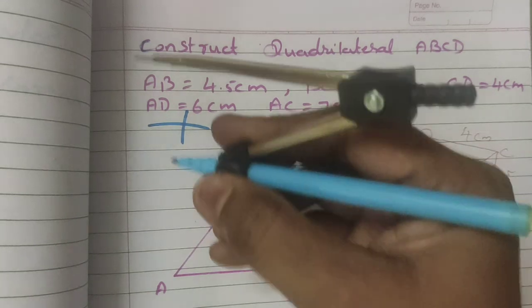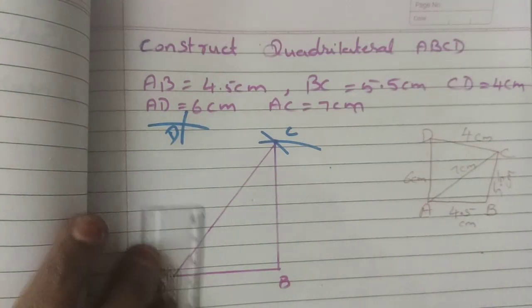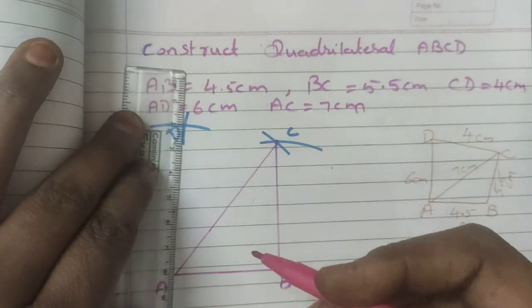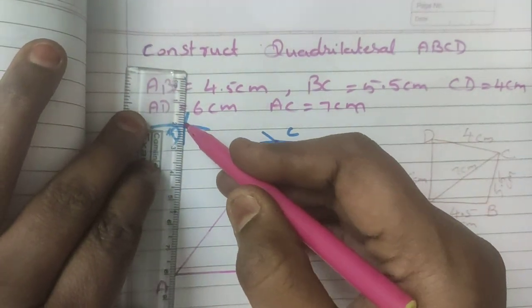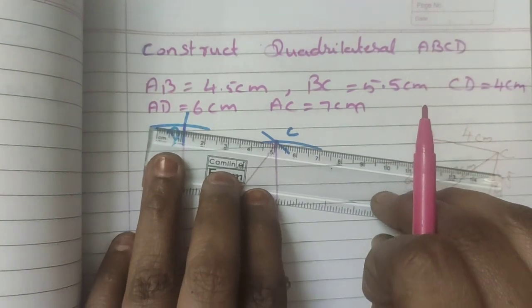Now, this point, exact point is D. Now, join AD and CD.